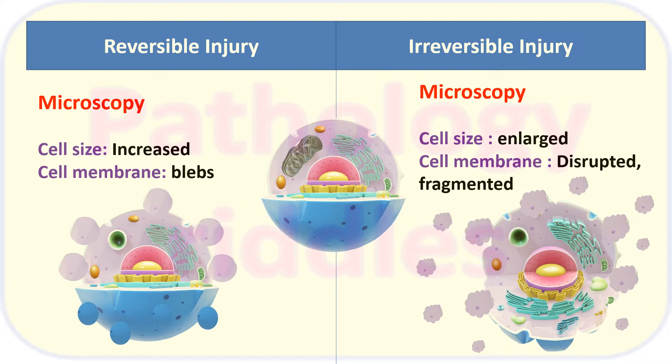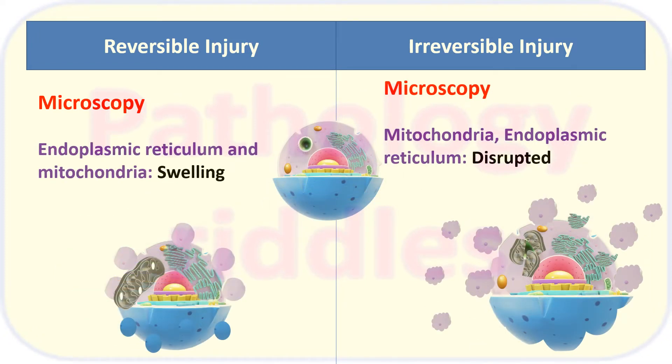In cases of irreversible injury, cell size may be increased or decreased, but the cell membrane is disrupted and fragmented — the integrity of the cell membrane is lost. The endoplasmic reticulum and mitochondria will show swelling in cases of reversible injury, again due to fluid homeostasis disruption.